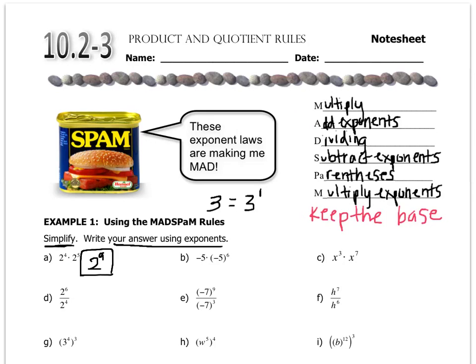Over here in letter B, negative 5 doesn't have an exponent, so I'm going to squeeze a little 1 up there for it. And now, even though I have parentheses here, they don't mean the parentheses rule. I'll show you what it looks like when you have the parentheses rule. Right now, these are just representing multiplication, because there was a dot in between here. So it's negative 5, and I always taught you to put negatives in parentheses, and 1 plus 6 is 7, and that's all we have to do.